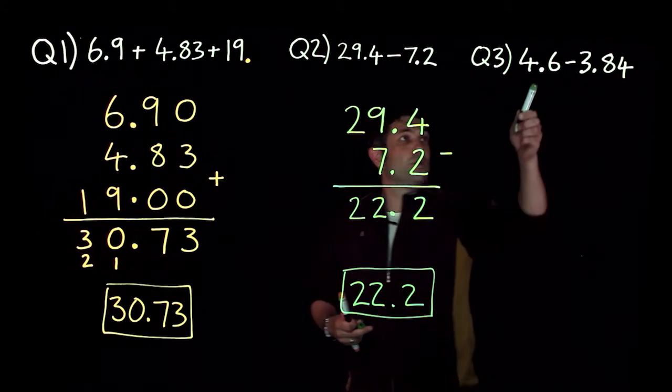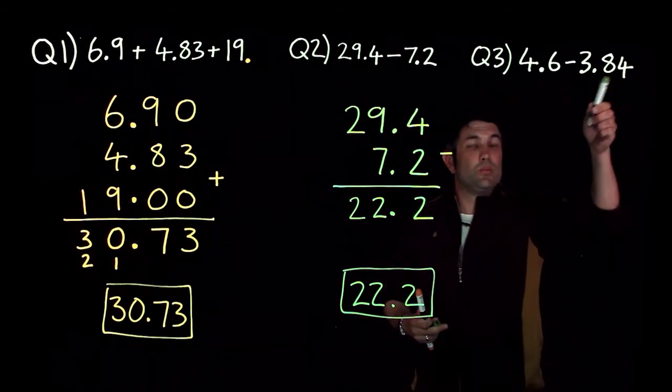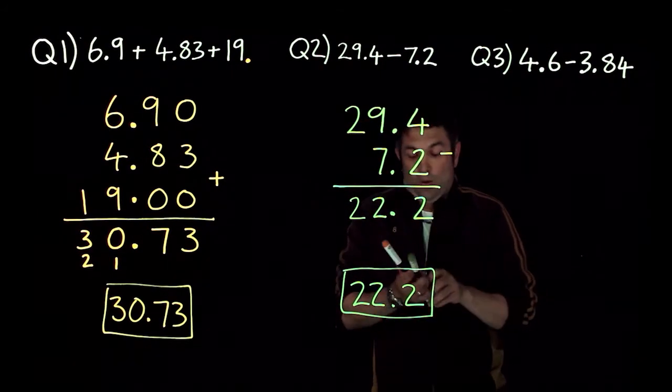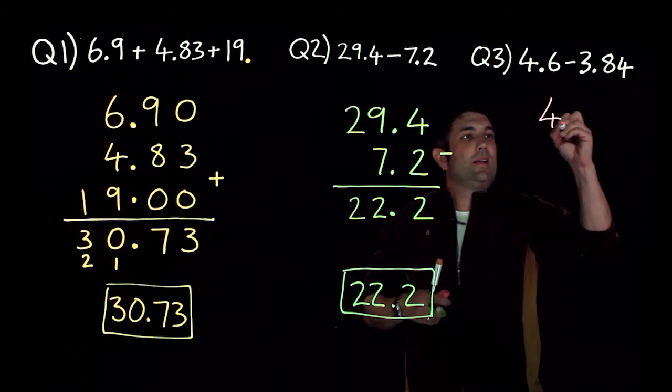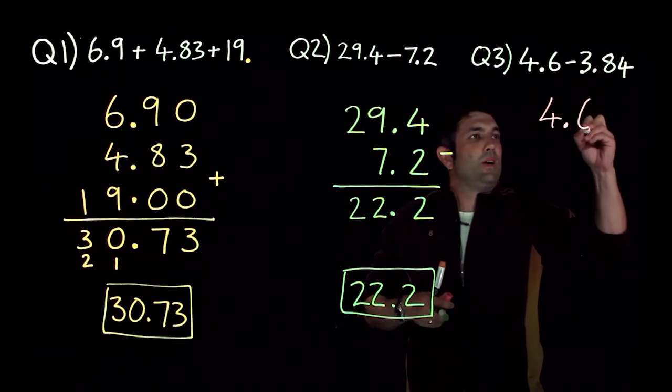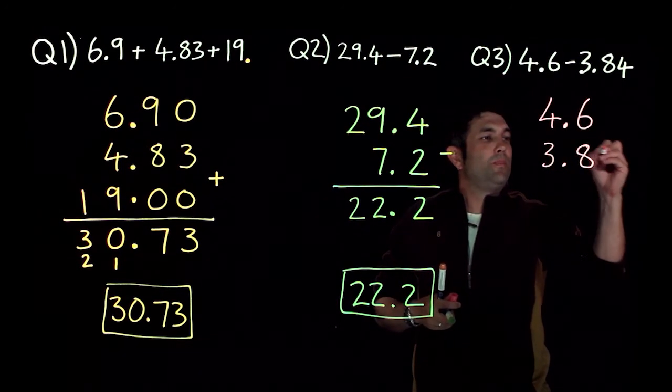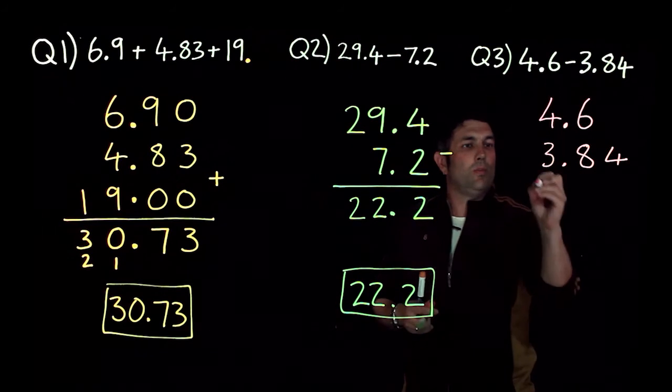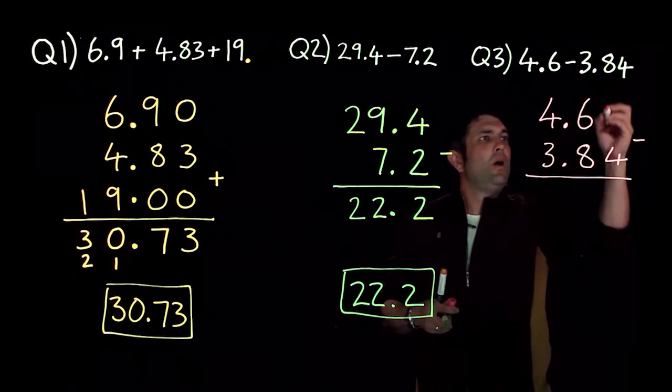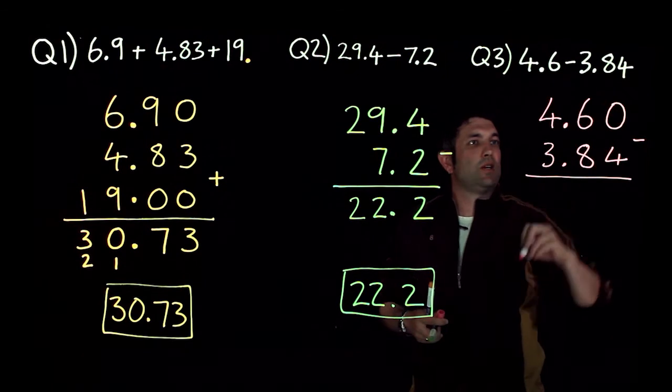A little bit tougher over here because we've got one decimal place, two decimal places. So what we need to do is once again get to ensure that the right place values are in the right place essentially, we need to get these in a column. Now we've got nothing there so once again I'm going to fill up with a 0.